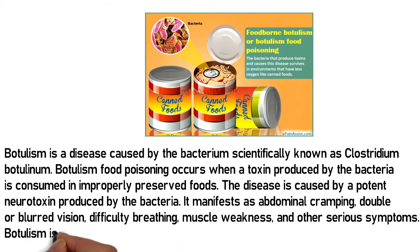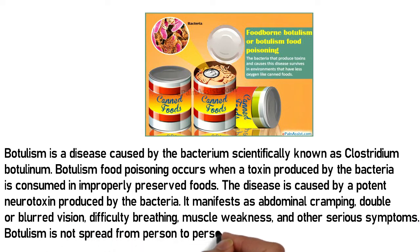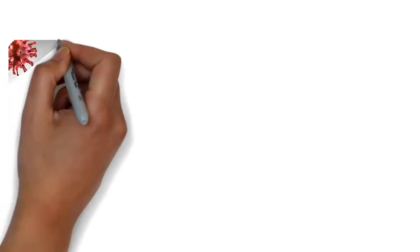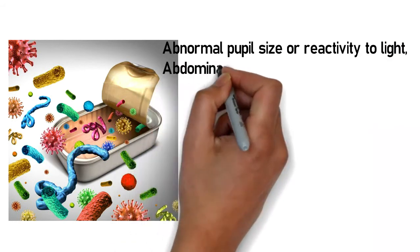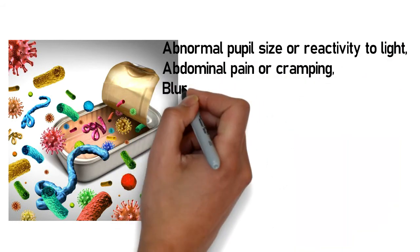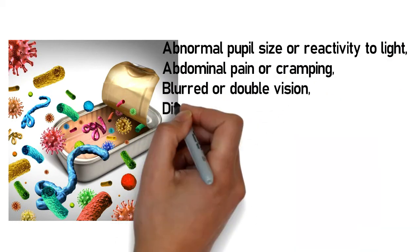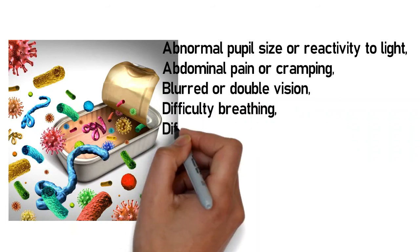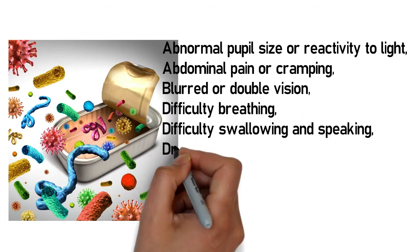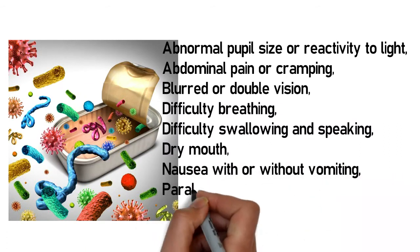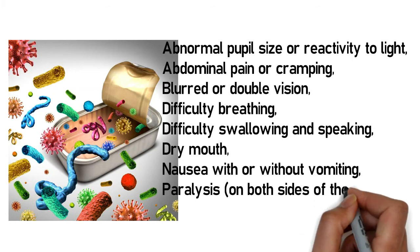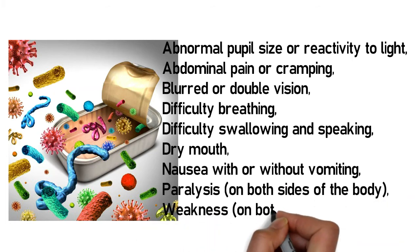Botulism is not spread from person to person. Symptoms of botulism food poisoning include abnormal pupil size or reactivity to light, abdominal pain or cramping, blurred or double vision, difficulty breathing, difficulty swallowing and speaking, dry mouth, nausea with or without vomiting, and paralysis or weakness on both sides of the body.